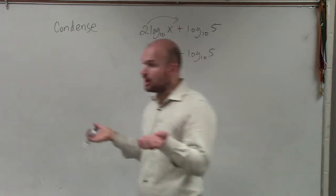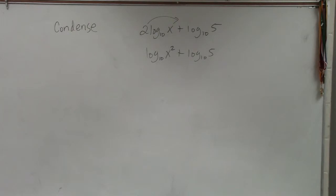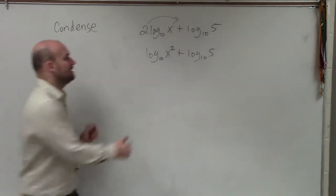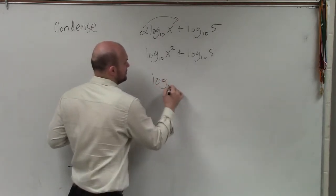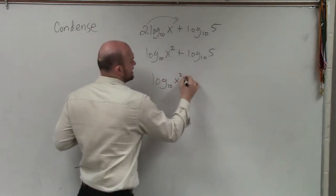Now we can see that we have two logarithms with the same base, but instead of subtracting like we did last problem, now we're adding. So since we're adding, we can rewrite this as one single logarithm of x squared times 5.